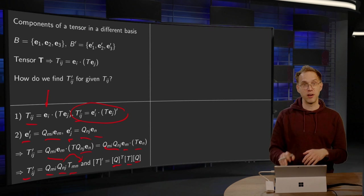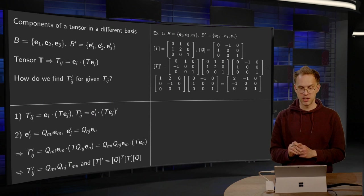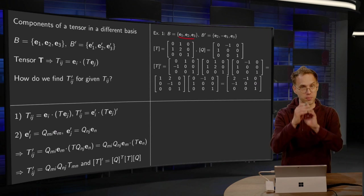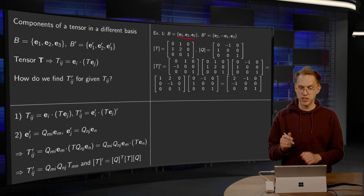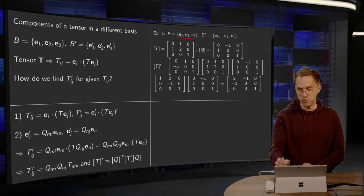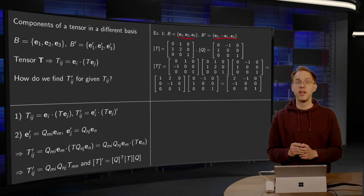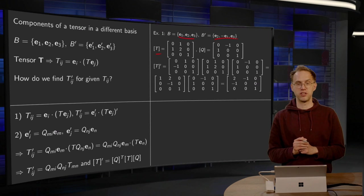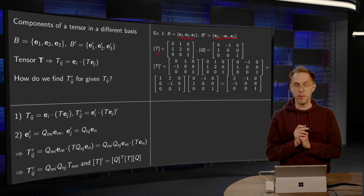So that is how you can compute your new components. So again a small example. We start with some basis e_1, e_2, e_3, usually standard basis. We take some new basis over here, and we take some tensor, in this case I took this tensor with some numbers.